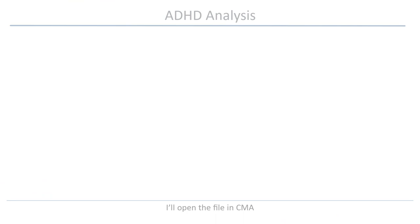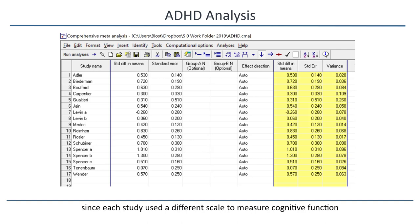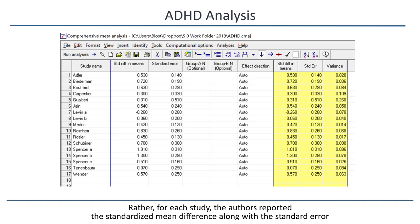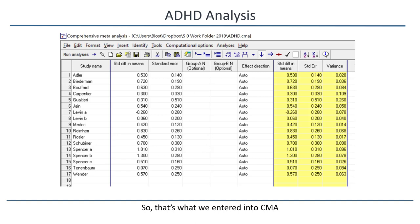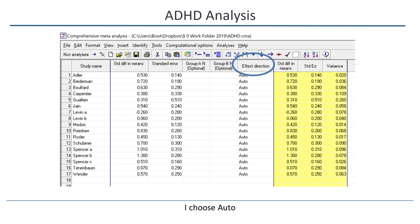I'll open the file in CMA. Typically, we would enter the mean, standard deviation, and sample size for each study. But in this example, the authors did not report these values, since each study used a different scale to measure cognitive function. Rather, for each study, the authors reported the standardized mean difference along with the standard error. So that's what we entered into CMA. This column holds the standardized mean difference. This column holds the standard error. We don't have the sample size, so we leave that blank. This column is for the effect direction. I choose Auto, which means that any effect entered as a positive number will be positive, and any effect entered as a negative number will be negative.